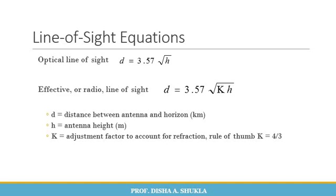Another relation is the optical line of sight d, given as d = 3.57 × √h, and the effective or radial line of sight d = 3.57 × √(kh), where d is the distance between the antenna and the horizon, h is the antenna height, and k is an adjustment factor to account for refraction. As a thumb rule, k is generally equal to 4/3.